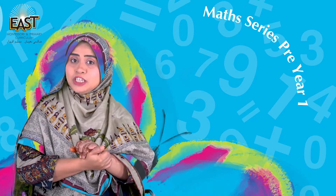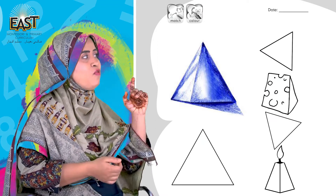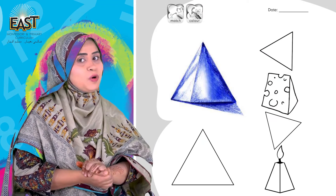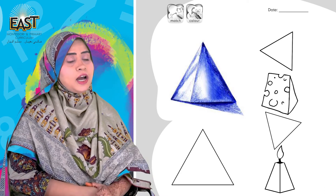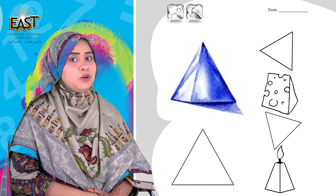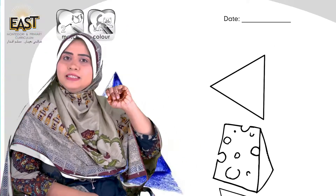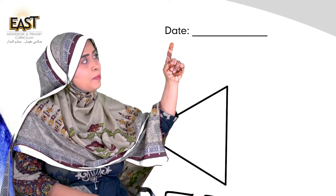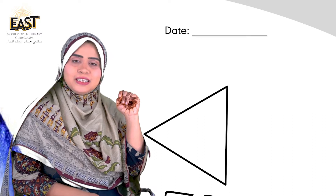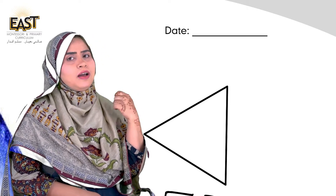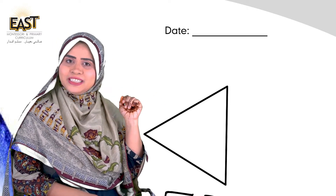Chalein, ab hum kya karate hai? Hum aise karate hai — book ka page open karate hai. Open page number 46. Page number 46 aap ne open kar liya. Very good. Aachha janaab, page open karne ke baad, sabse pahle date dalte hai. Jaldi se aap loog date dal lijiye. Agar nahi aa rahi hai to aap mamma se help le lijiye.